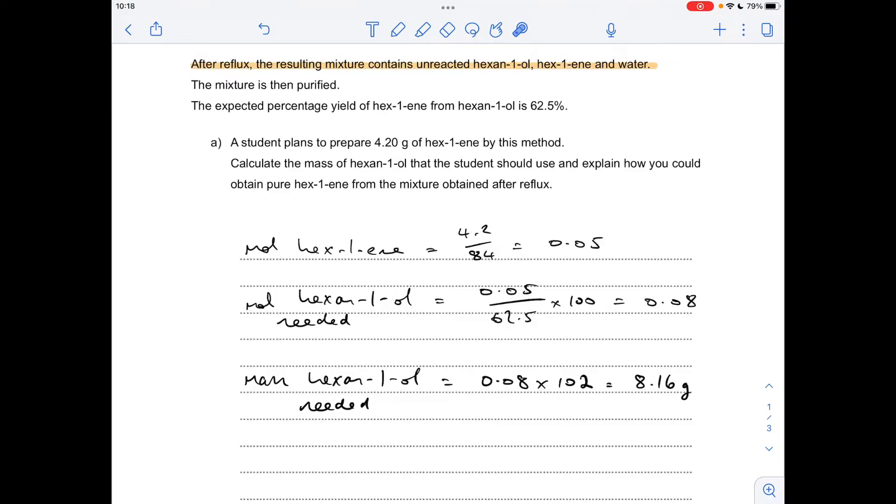So moving on to the procedure now to obtain the pure hexane-1-ene from the mixture, I've highlighted the key line here. After reflux the resulting mixture contains unreacted hexane-1-ol, hexane-1-ene and water. Obviously we want to just isolate that there.